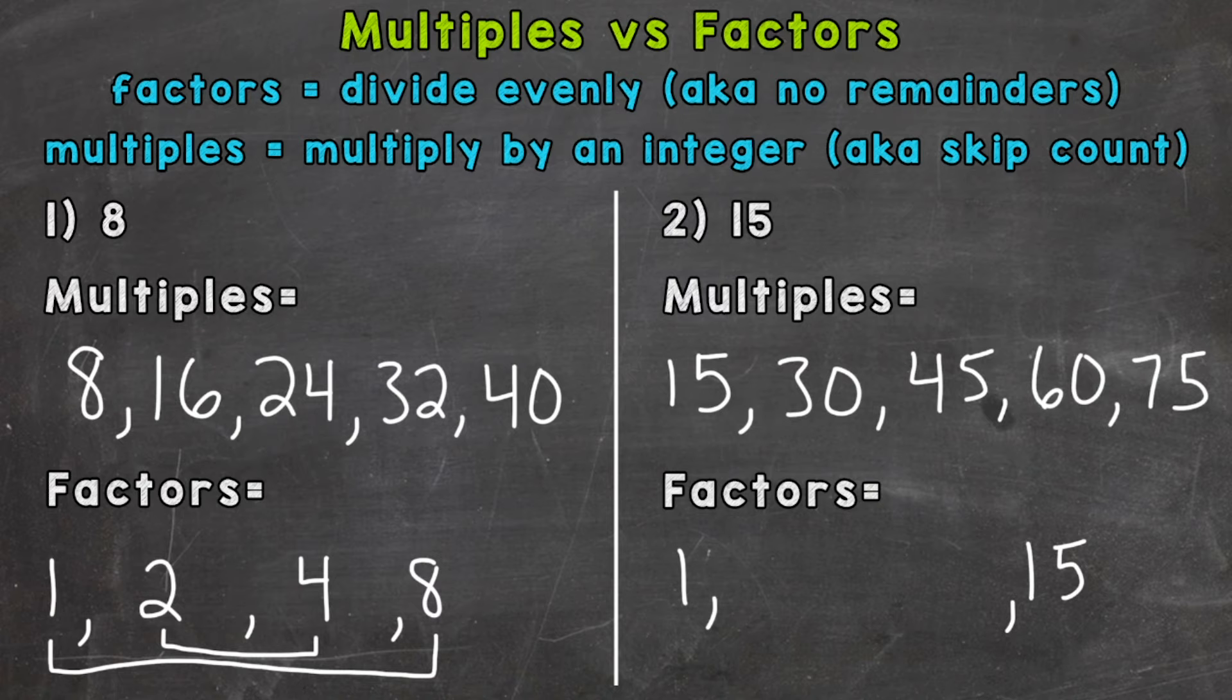What other numbers go into 15 or can multiply to get 15? Well, I know 15 divided by three, and three's partner is five, right? Because, let me start with this, one and 15 are partners, and then three and five are factor pairs or partners. And those are all the factors of 15.